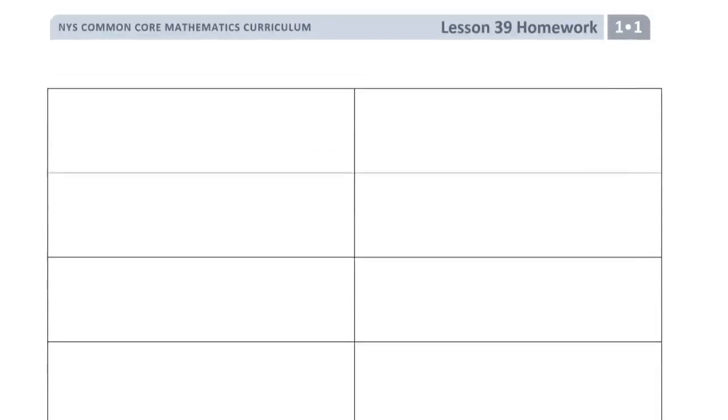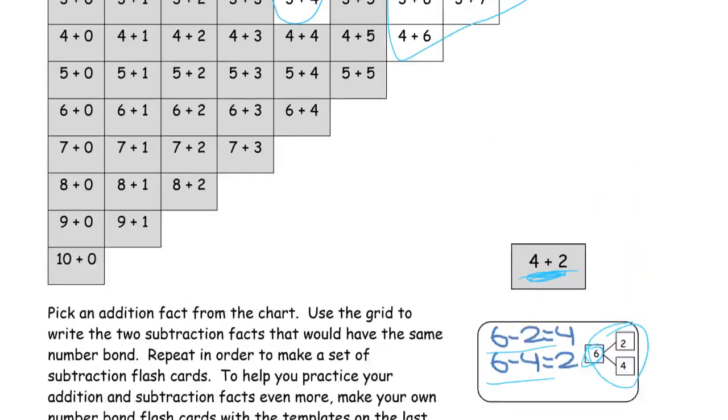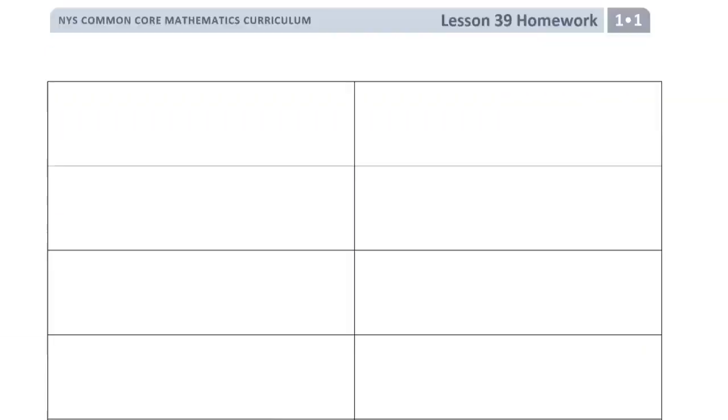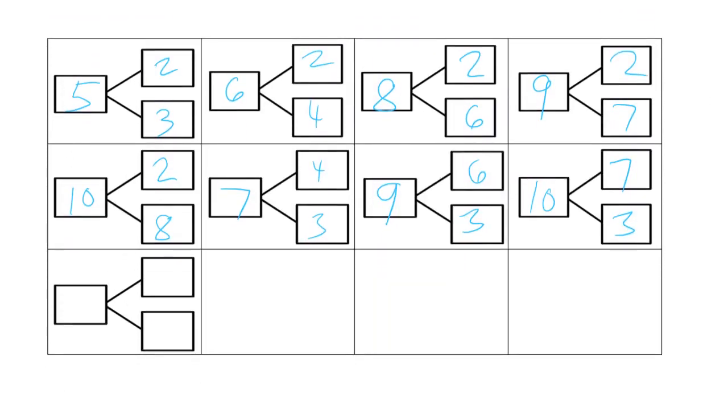And then we get to the last one, 4 plus 6. That's a way to make 10. 4, 6, 10. Now you can use these to make your related subtraction sentences. So for this one, for instance, you would have 9 minus 7 equals 2, and 9 minus 2 equals 7.